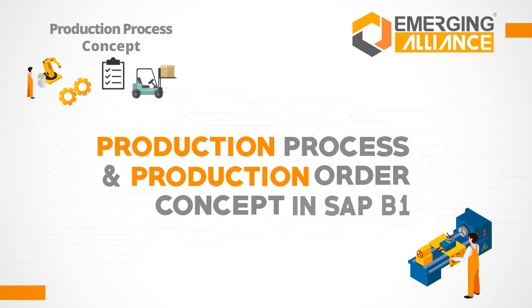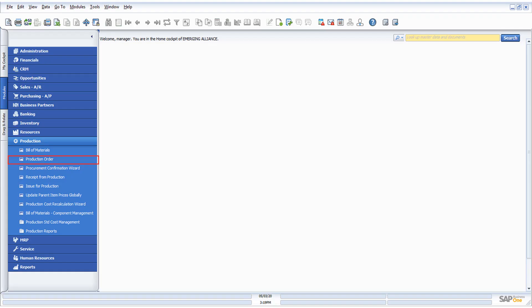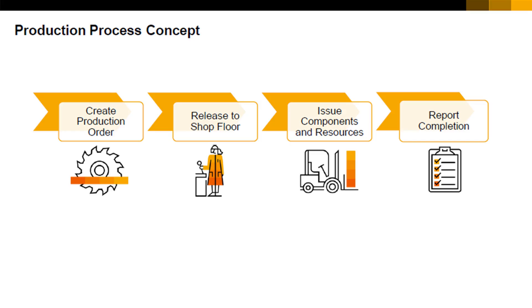In this video, you will get to know in detail about the production process and production order concept in SAP Business One. In SAP Business One, the production process starts with creating a production order. This is the main document in the production process. It records the progress of the production process for each item produced.